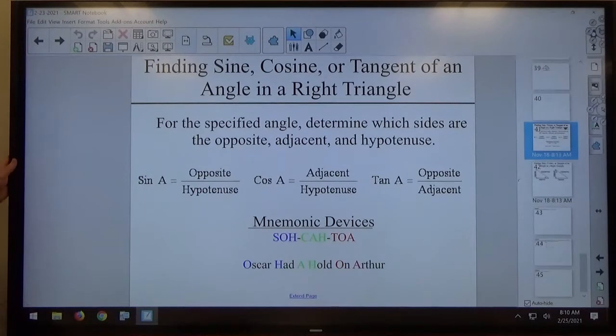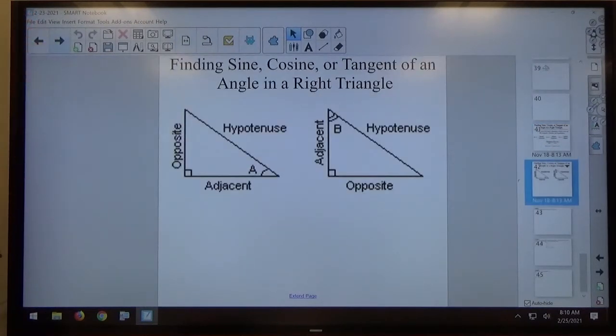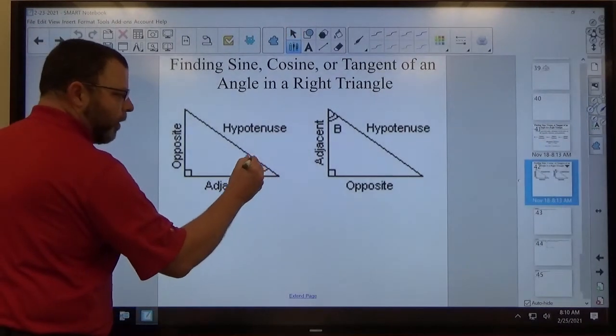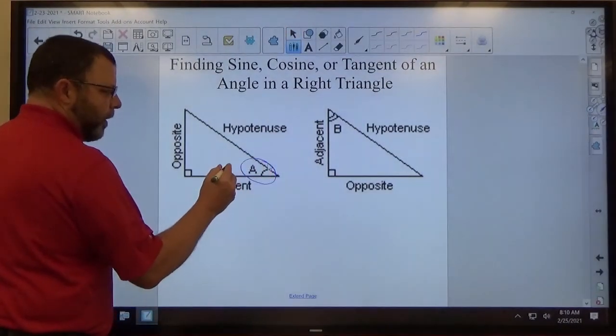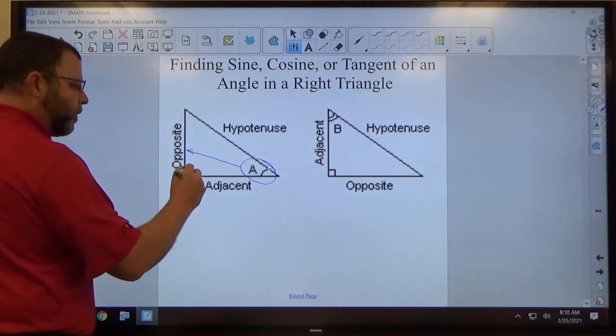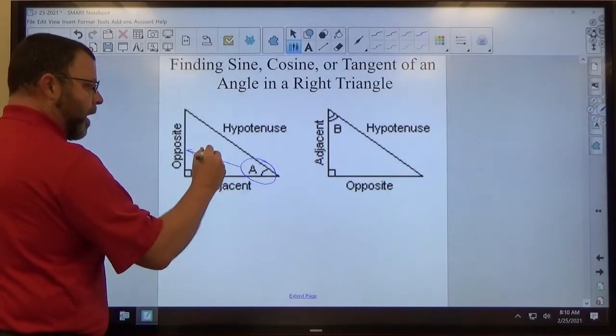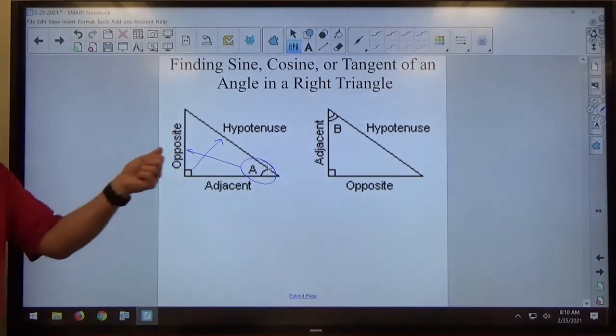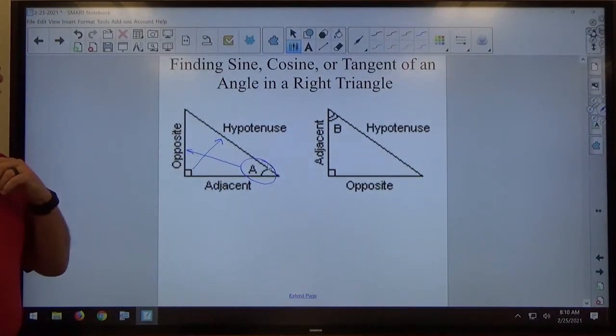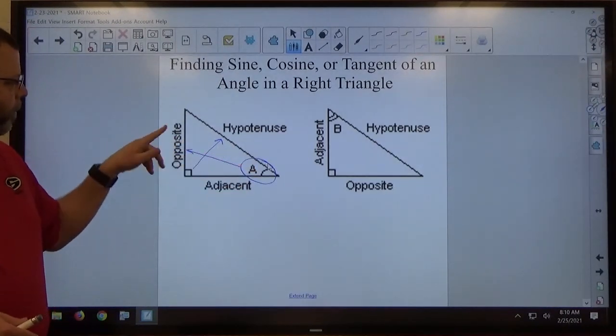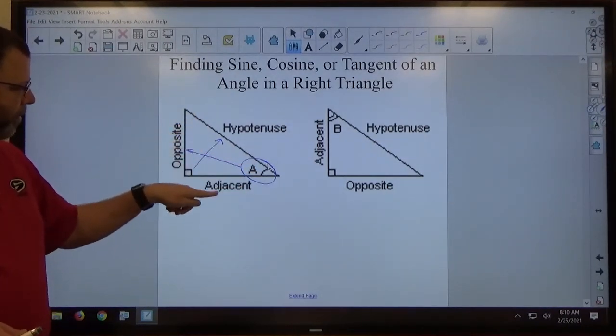And the three sides in the triangle, let me jump to this page real quick. For a given acute angle, so if we're dealing with angle A here, the side opposite angle A is the side across from angle A. The side opposite the right angle is the hypotenuse, so you can use the word opposite to describe two of these three sides. The adjacent side is the remaining side after you've identified those two. So if we're dealing with acute angle A, this side's opposite, that's the hypotenuse, so that side's the adjacent.